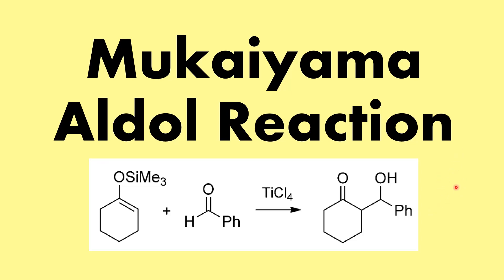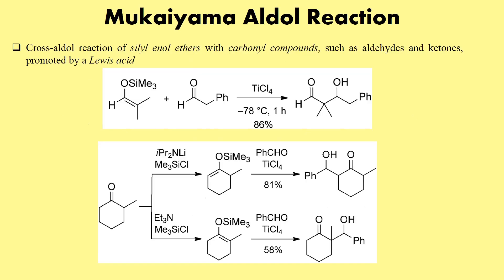Welcome everyone. In my previous videos on aldol reaction I have already covered the boron enolates and the six-membered transition state, the Zimmerman-Traxler transition state, via which the aldol addition takes place. This is the last in its series, which is the Mukaiyama aldol reaction. What we use here is basically a silyl enol ether, a carbonyl source, and this reaction is mediated by a Lewis acid such as titanium chloride.